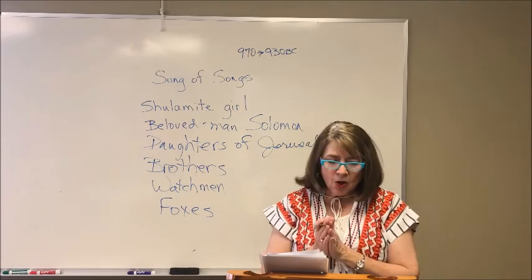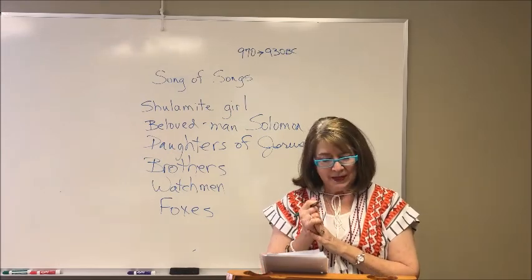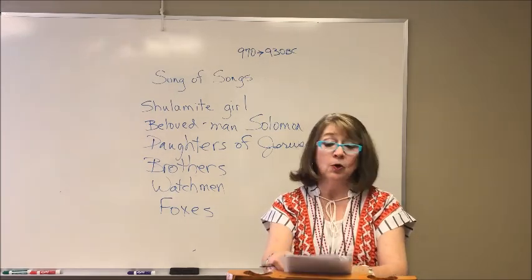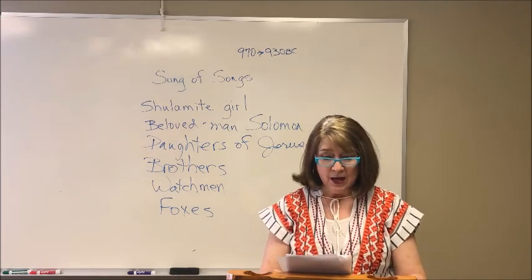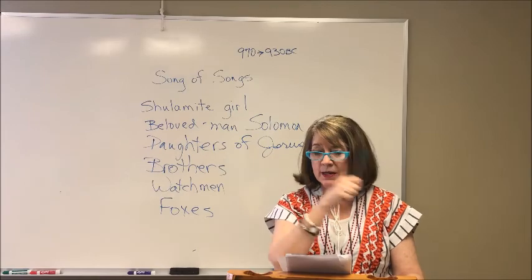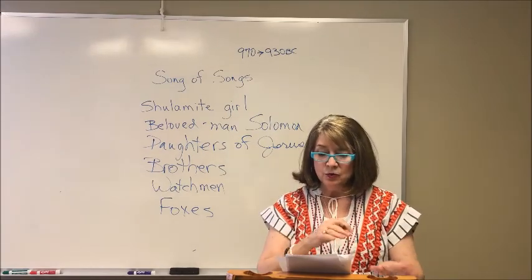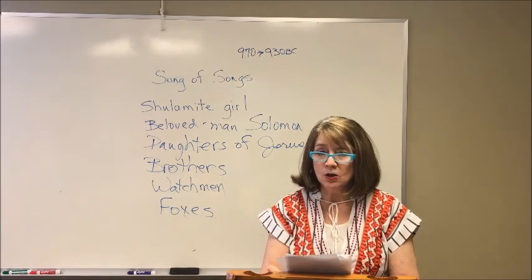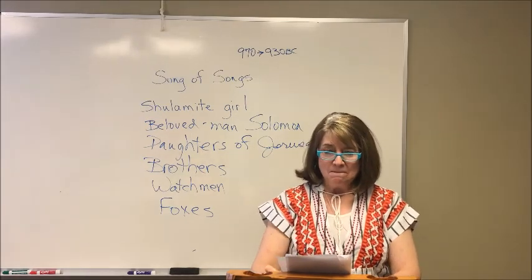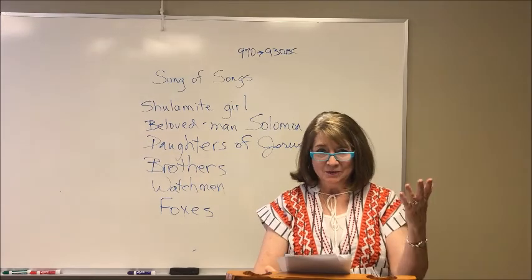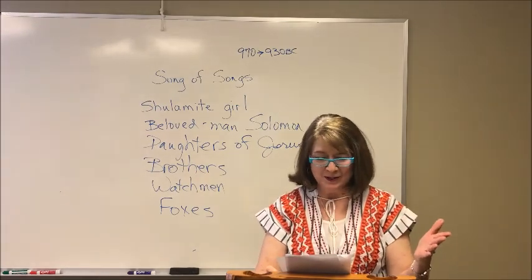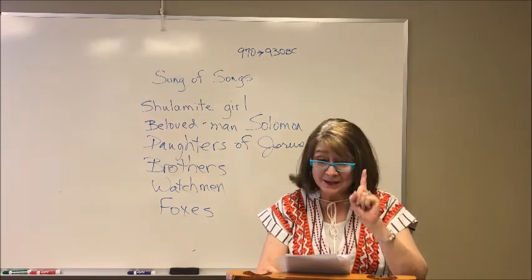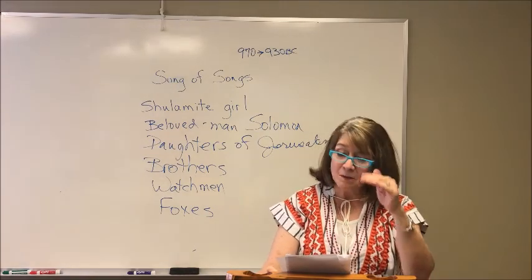The Song of Songs, the Song of Solomon, is the third book written by King Solomon, sometime between 970 and 930 BC. In the New Living Translation it's called the Song of Songs, which is a way of saying superlative — this is the best of the songs. We know that Solomon wrote 1,005 songs, so out of all of those this is number one; those other 1,004 somehow fall below this.